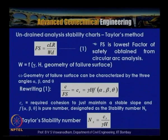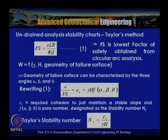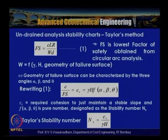The geometry of the failure surface can be characterized by three angles: alpha, beta, and theta. Rewriting, c divided by factor of safety equals c_r equals gamma times h times a function of alpha, beta, theta. Here c_r is the required cohesion to just maintain a stable slope, and the function of alpha, beta, theta is a pure number designated as the stability number n_s. Taylor's stability number is given as n_s equals c_r divided by gamma h, published in 1948.